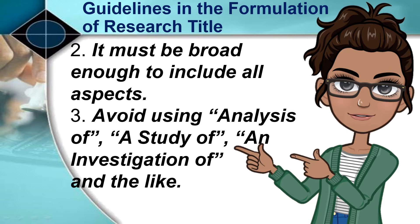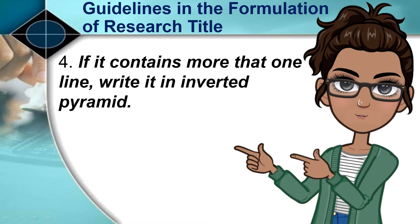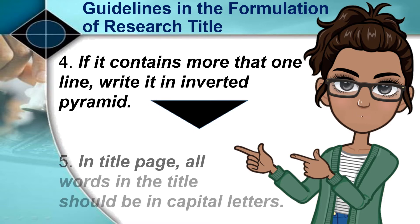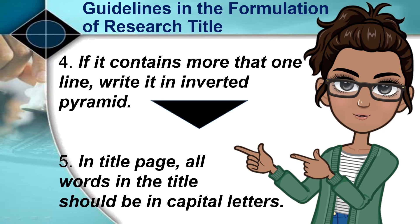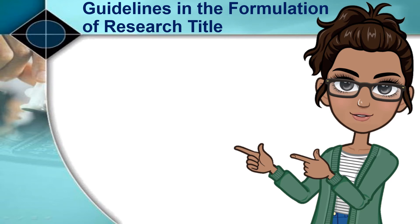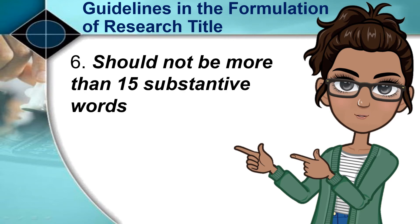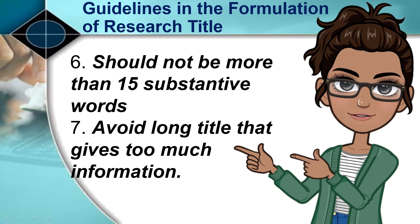All these are understood to have been done in a research. Number 4: If the title contains more than one line, it should be written in inverted pyramid like the figure in this slide. Number 5: When typed or encoded in the title page, all words in the title should be in capital letters. Number 6: If possible, the title should not be longer than 15 substantive words. Number 7: Avoid a long detailed title that gives too much information. To shorten the title, delete the terms 'assessment' or 'evaluation' if these are already emphasized in the text.